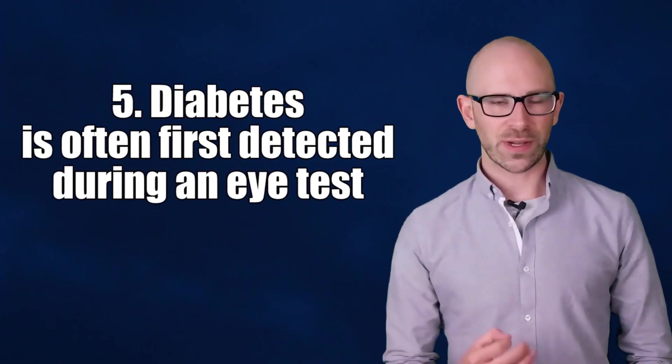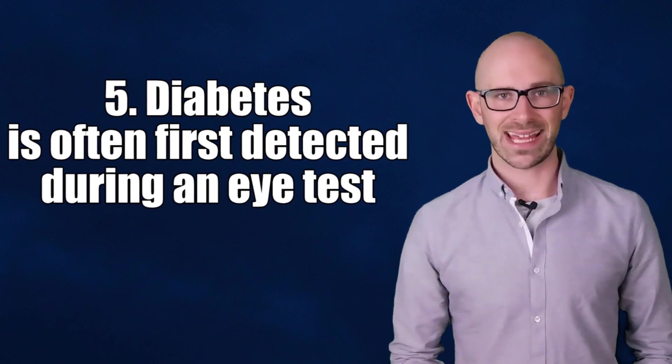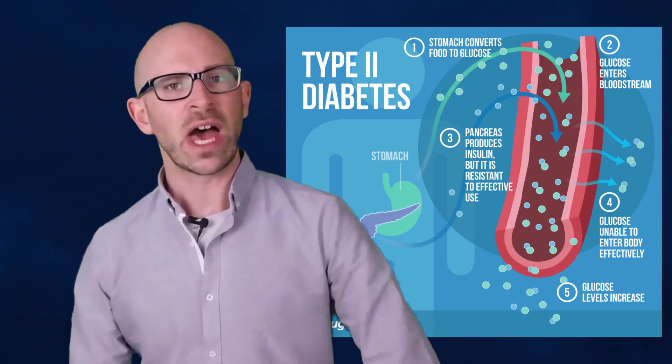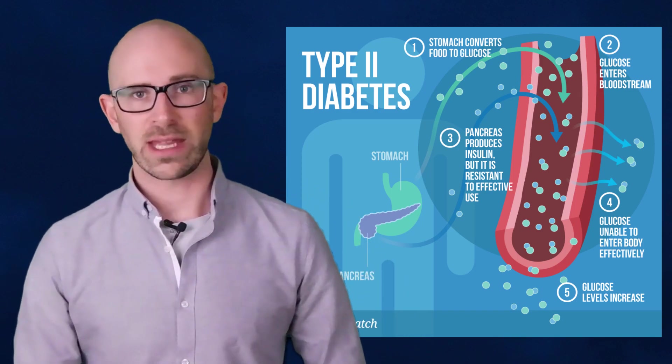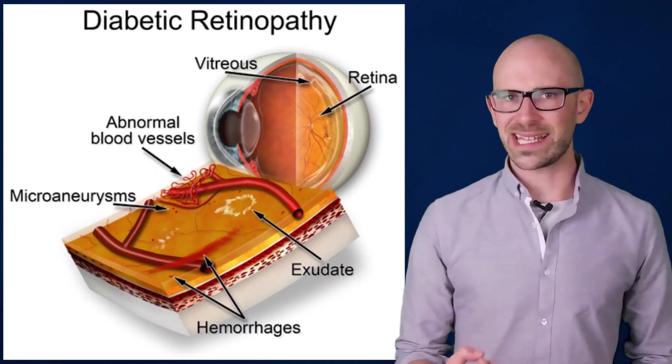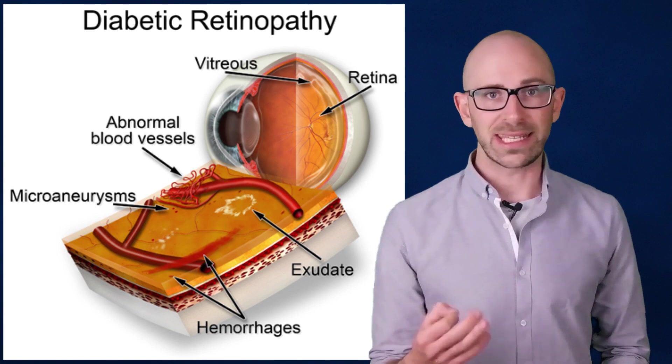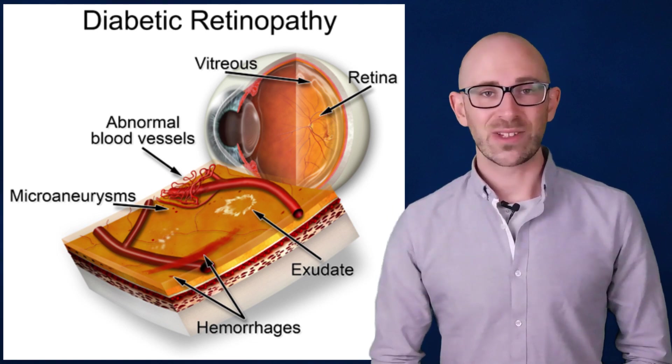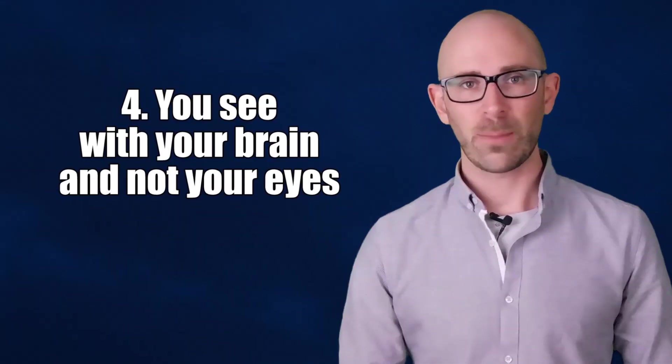Diabetes is often first detected during an eye test. People who suffer from type 2 diabetes, the type you develop later in life, are often symptom-free, meaning they don't even know they have it. This type of diabetes is commonly picked up during an eye test as it can be seen as tiny hemorrhages from leaking blood vessels at the back of your eye. This certainly is a good reason to get your eyes tested regularly.